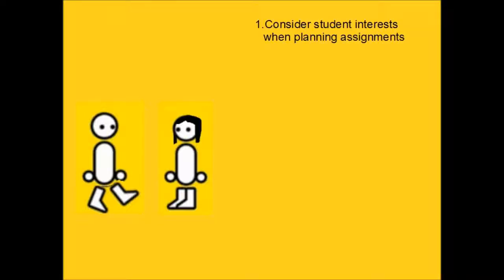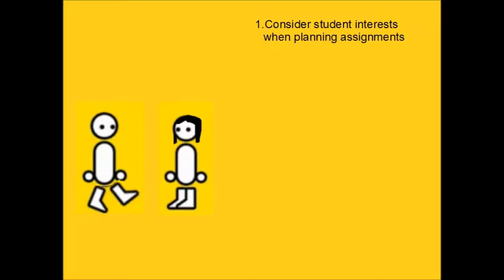She introduced me to a set of tips that are designed to help retain students in computer science. The first one is to consider students' interests when planning assignments, because students learn better when it relates to their own lives. Number two, emphasize intellectual capacity — like a muscle, it increases with effort. Students need to know there's not just one type of person that can learn computer science, and that all of them can succeed with a little bit of practice and study.